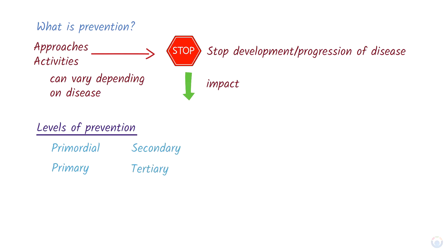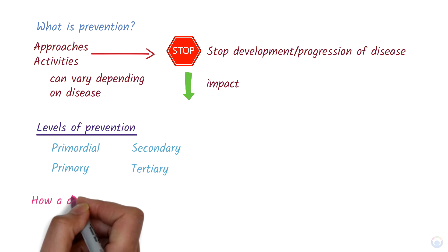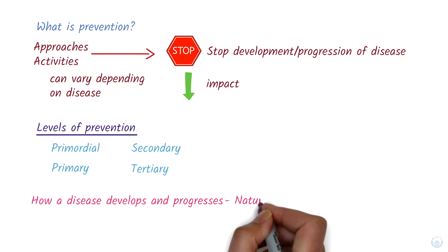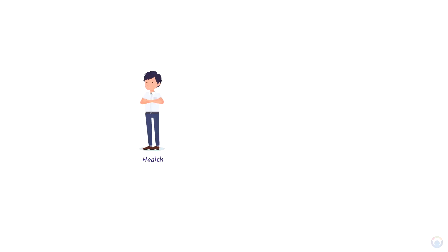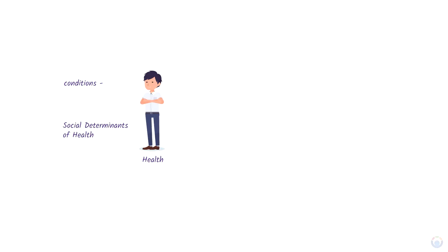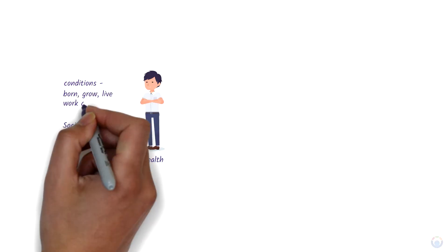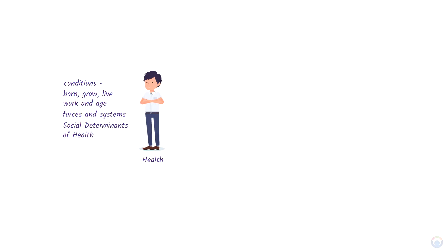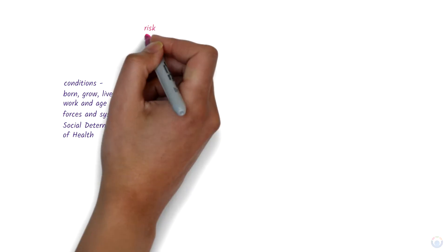Before going through these levels, we need to know how a disease develops and progresses — the natural history of disease. A person's health is influenced by the social determinants of health. These are the conditions in which people are born, grow, live, work, and age, and the wider set of forces and systems shaping the conditions of daily life. These can increase a person's susceptibility to a disease or the likelihood of being exposed to risk factors.